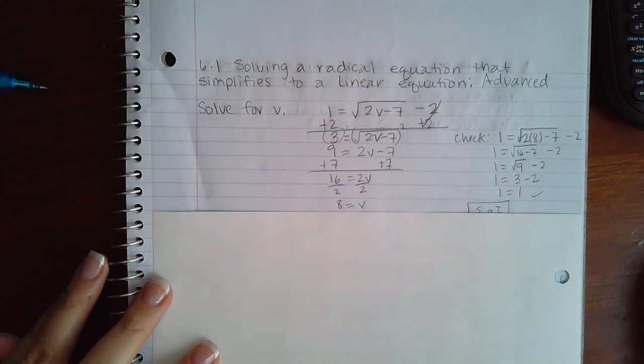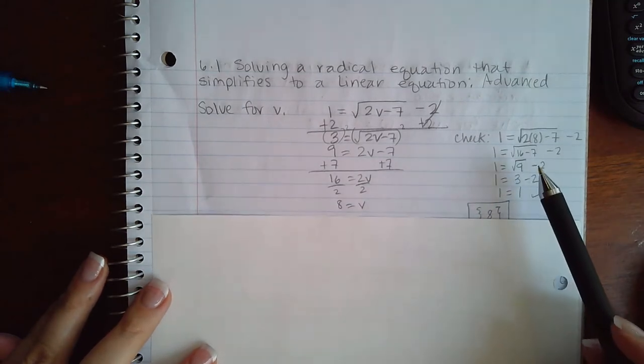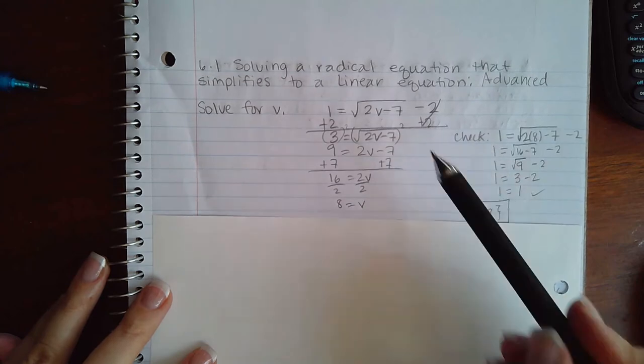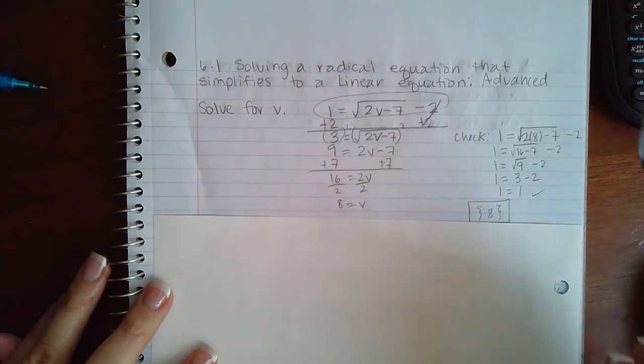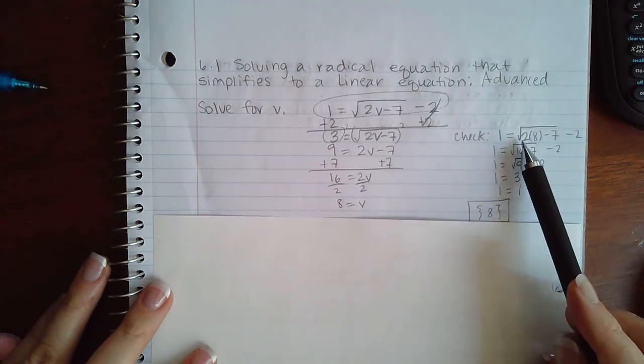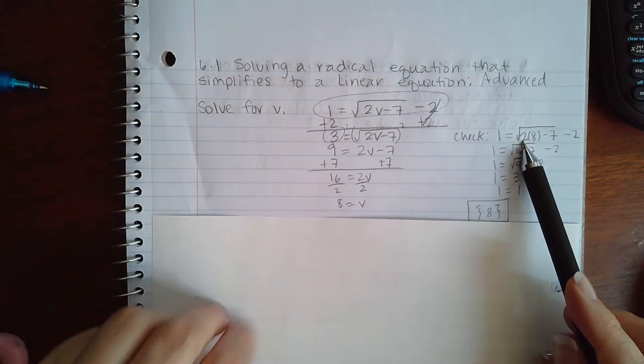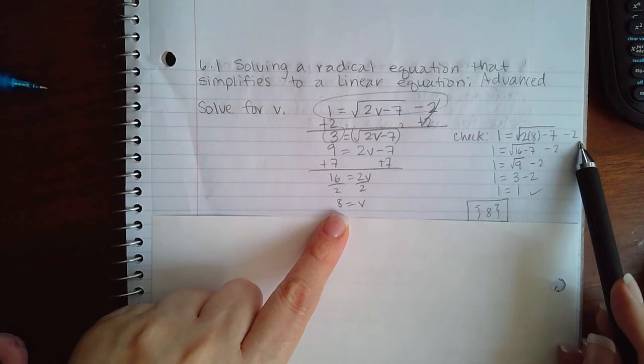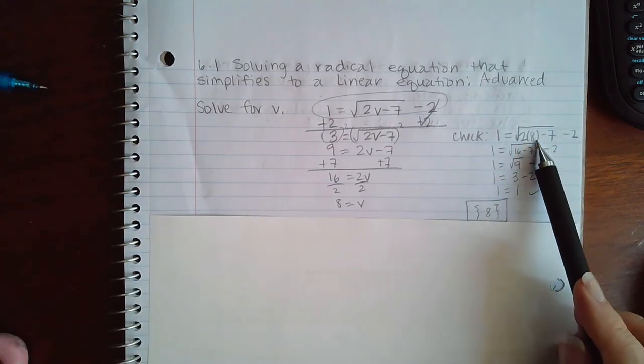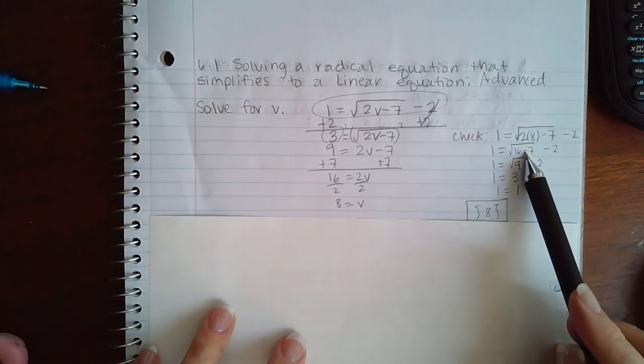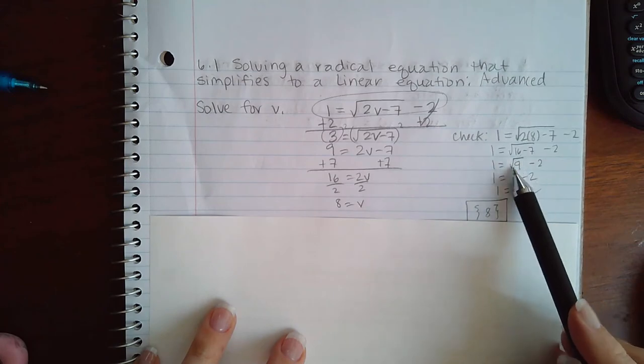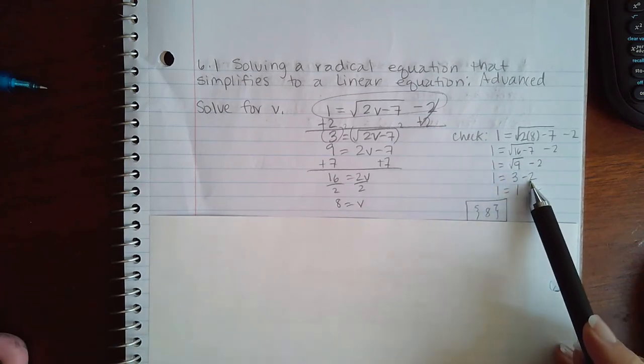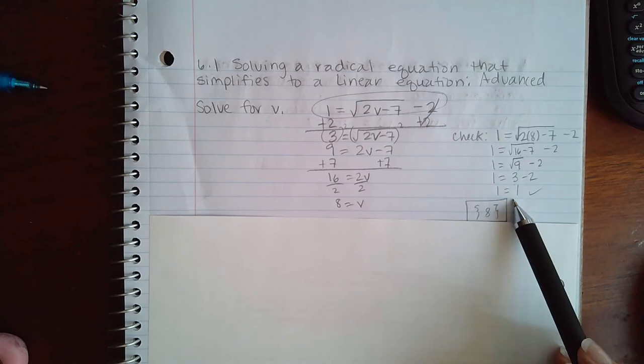Divided by 2 on both sides, I got that v equals 8. Then I came over here to check that answer, so I plugged it into the original equation: 1 equals square root of 2 times my v value 8 minus 7, and then outside the radical is a minus 2. So 2 times 8 is 16, 16 minus 7 is 9, the square root of 9 is 3, and if I minus that 2 from the outside I get 1. So this solution checks out, which means that is my final answer.